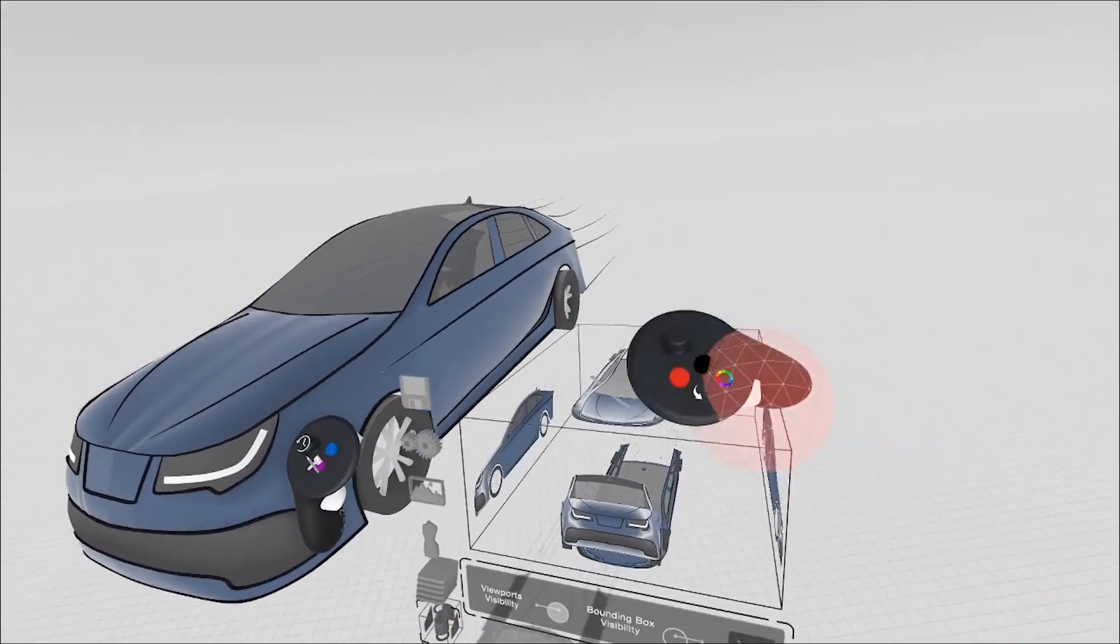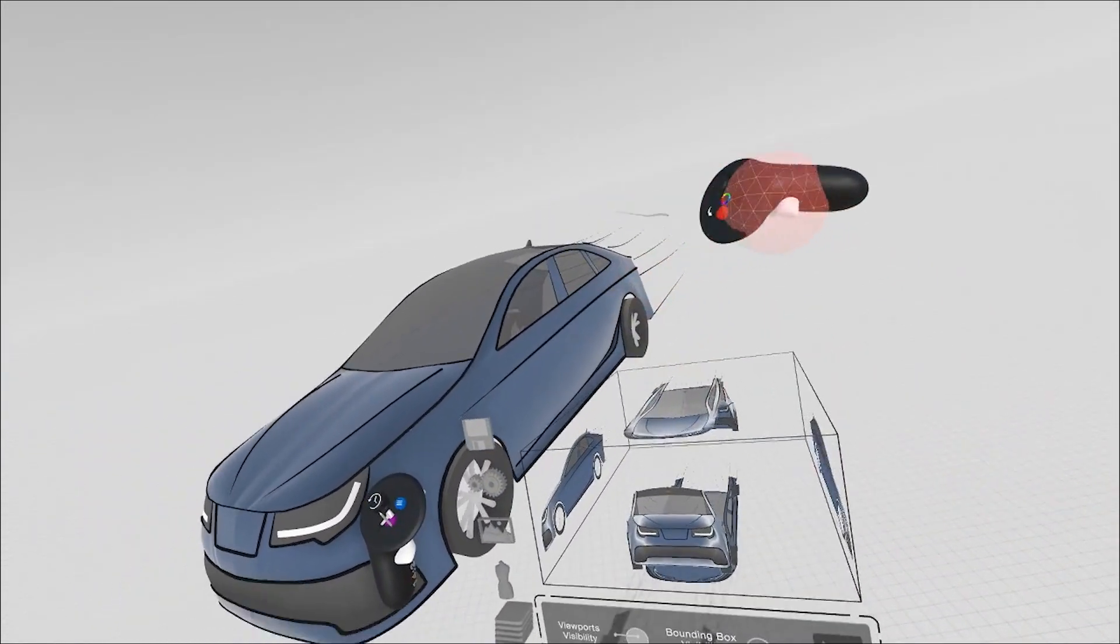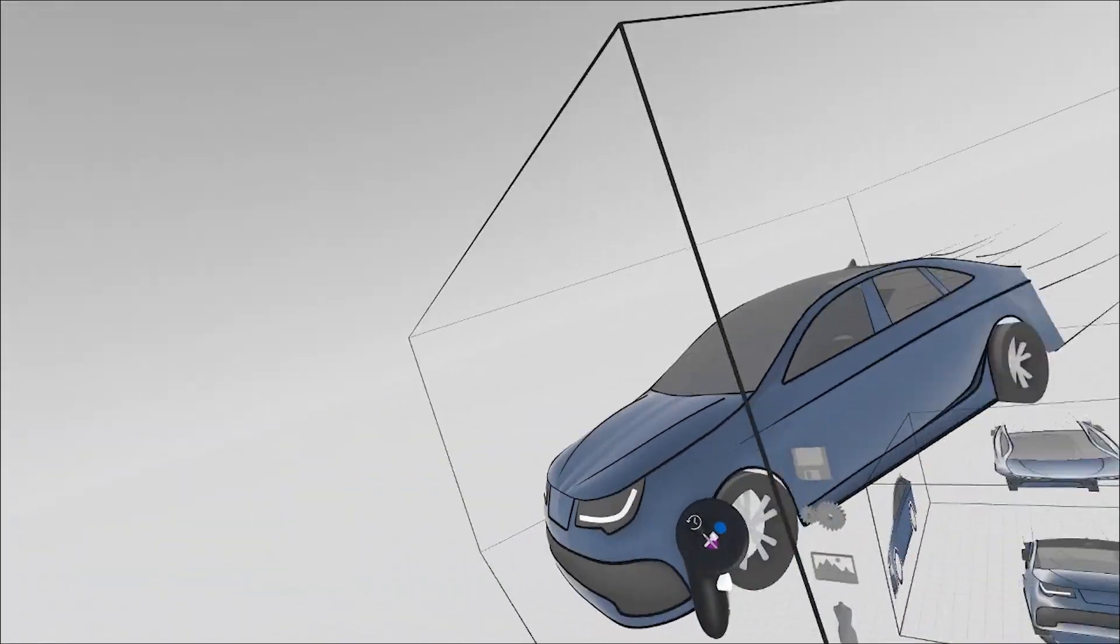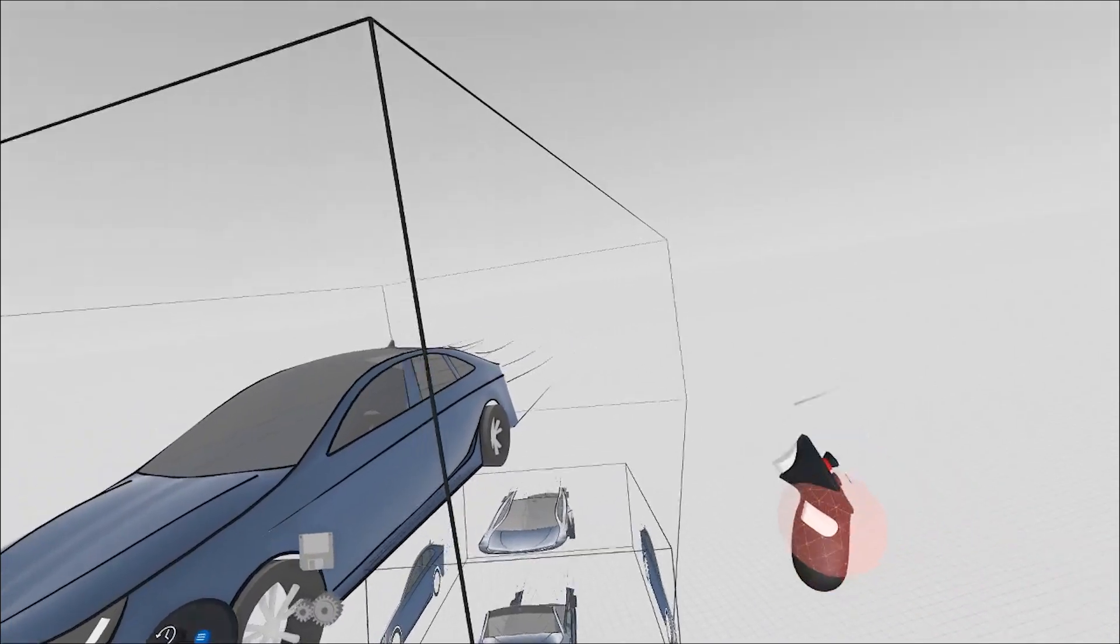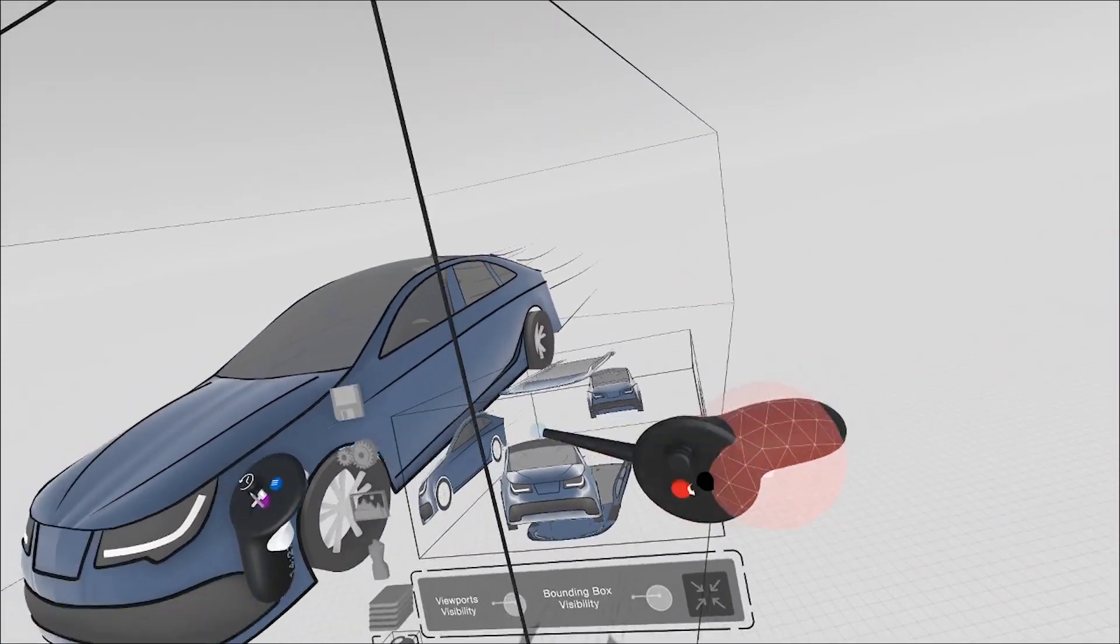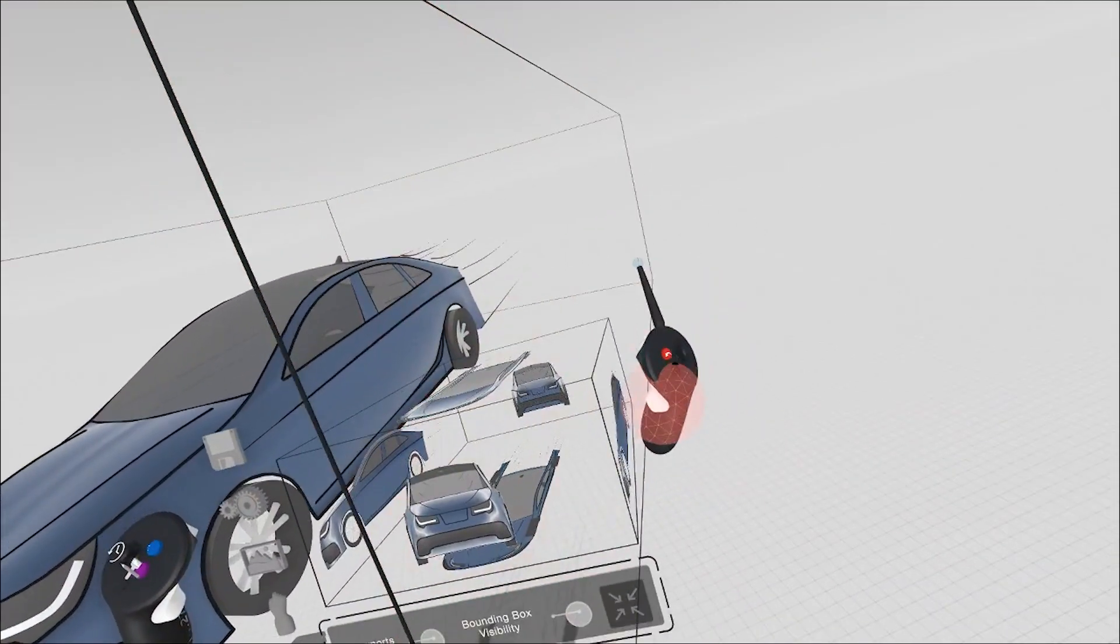What we've done is we've created a bounding box around the whole object, and you can view that bounding box by turning it on here. And we've created each side of the bounding box with a camera that shows you the sides of the content.